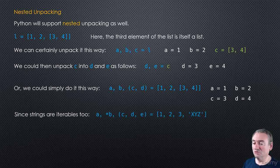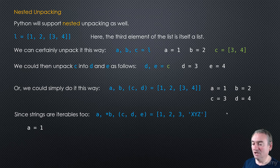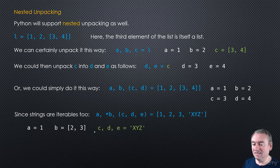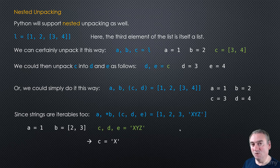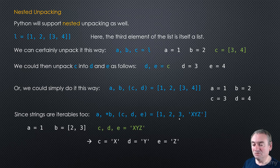Since strings are iterables too, you can write something like: A, *B, (C, D, E) = [1, 2, 3, 'xyz']. A gets 1, B gets the rest — [2, 3] — and the tuple (C, D, E) gets assigned 'xyz', so C gets 'x', D gets 'y', E gets 'z'. So we end up with A = 1, B = [2, 3], C = 'x', D = 'y', E = 'z'. That's nested unpacking.